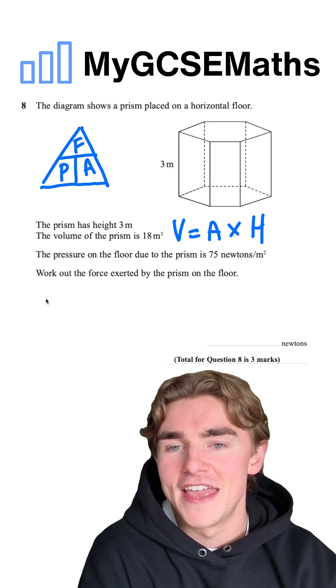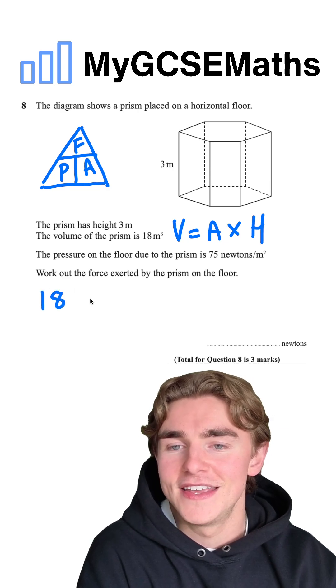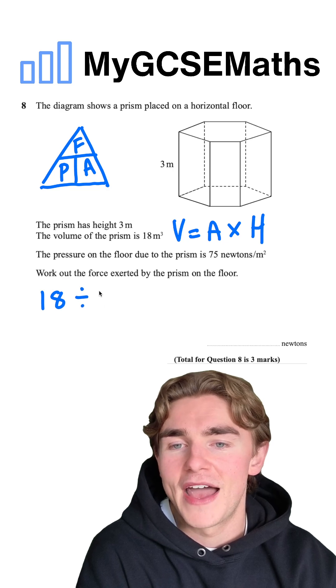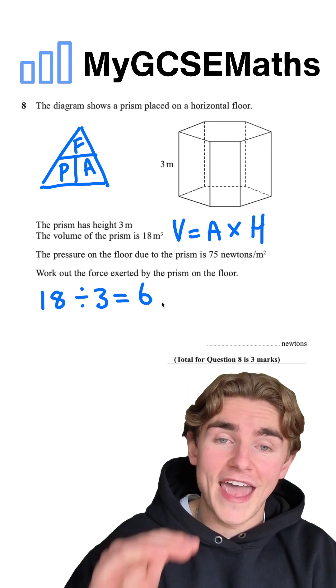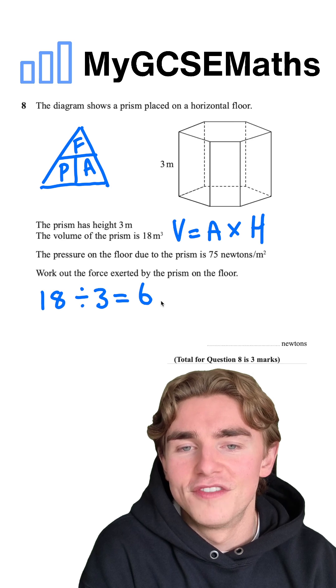So in this case, to work out the area of the end face, we can do 18, which is our volume, divided by our height of 3. 18 divided by 3 is going to give us 6, telling us that our end face is going to have an area of 6.